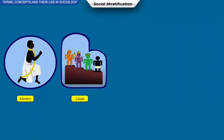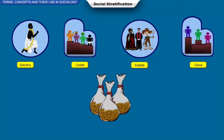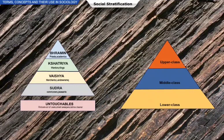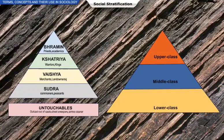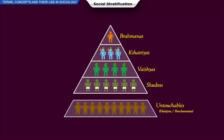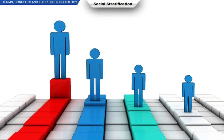Social stratification is defined as the structured patterns of inequalities that exist among different groups in society in terms of their differential access to materialistic or symbolic rewards. The structure of social stratification is similar to the geological structure of layered rocks on the surface of the earth. There are strata in society arranged in hierarchical orders, with the most advantaged social group at the top and the least advantaged group at the bottom. This hierarchical order helps us to understand the inequitable distribution of power in society.